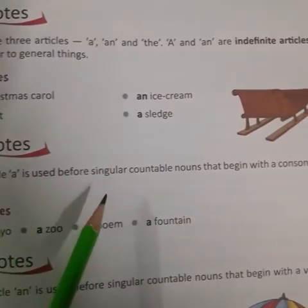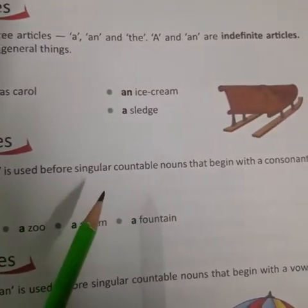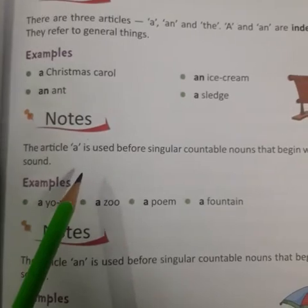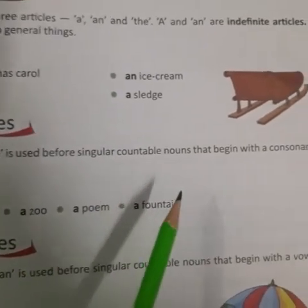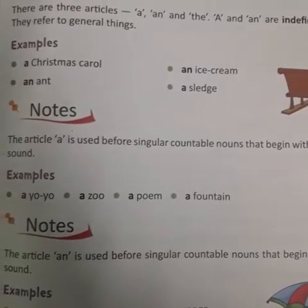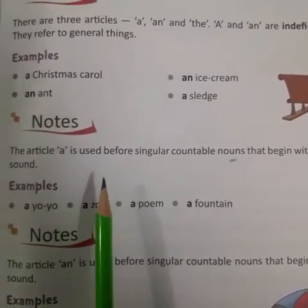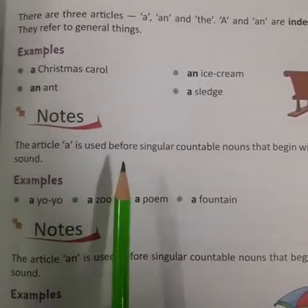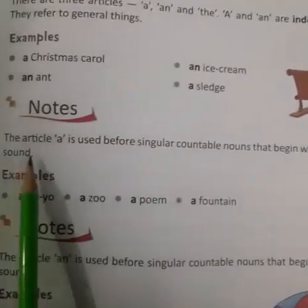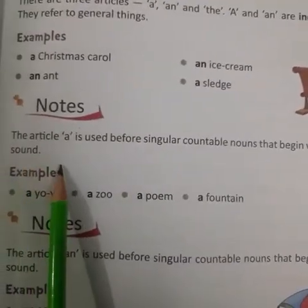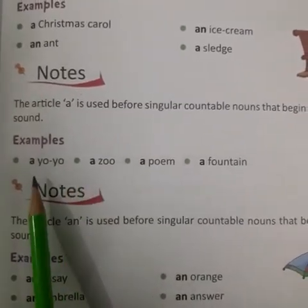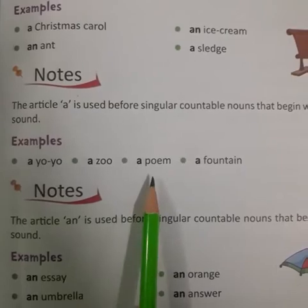The article 'a' is used before singular countable nouns that begin with a consonant sound. Article 'a' singular countable nouns ke saath mein use kiya jaata hai jo consonant sound se start hote hain. Only singular — a yoyo, a zoo, a poem, a fountain.